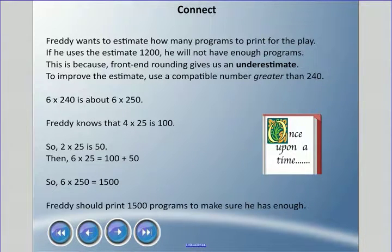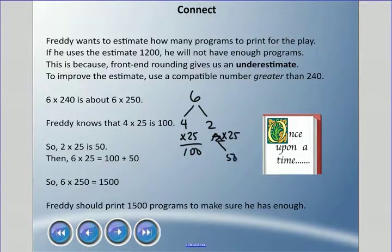What he's doing here is he's taking that 6 and breaking it into 4 and 2, and he's going to multiply these by 25. He knows 4 times 25 is 100, like four quarters equals a dollar, and he knows that 2 times 25 is 50. So if we add those two together, he can say that he needs 1500 programs to make sure he has enough.